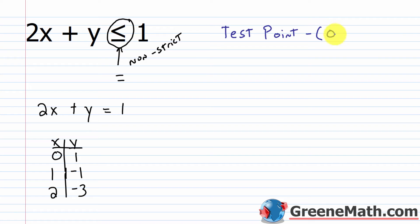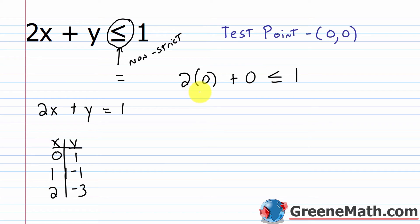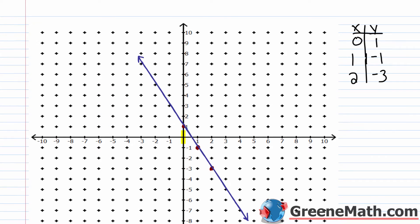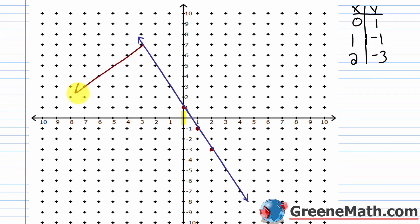Our test point is (0, 0). I plug in 0 for x and 0 for y: 2 times 0 plus 0 is less than or equal to 1, which gives 0 is less than or equal to 1. That's true. So (0, 0) is in the solution region, meaning the solution region is below the line. I would shade everything below the line.